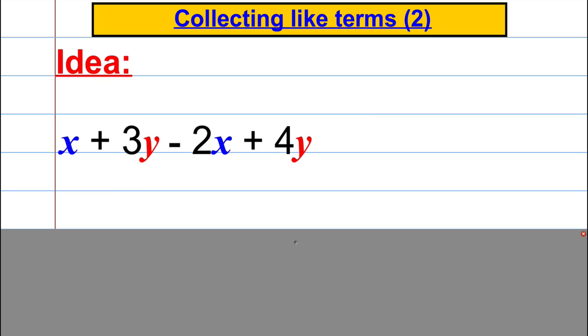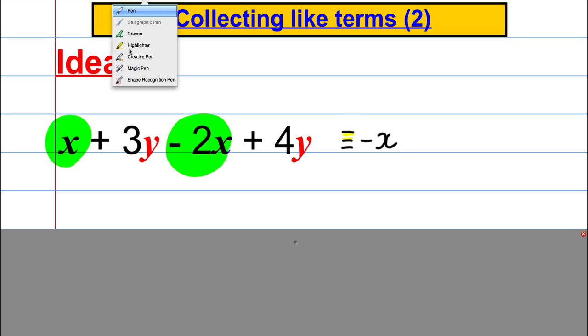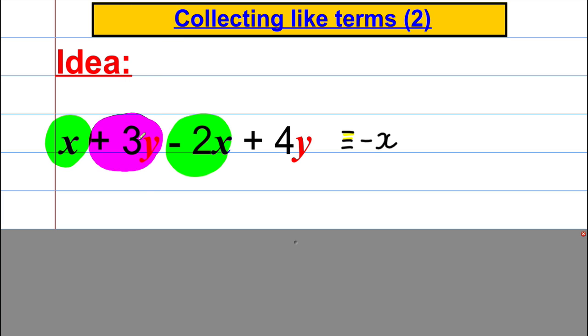In the first video we were collecting like terms in the following: we'd say we've got 1x and we take away 2x, so that leaves us with a negative x, and we had 3y plus 3y and we add another 4y, so we have a plus 7y. So that's what we're doing in the first video.